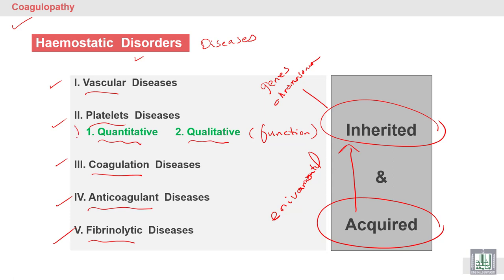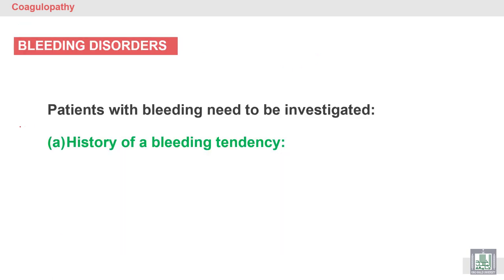Diseases may be quantitative or qualitative. Qualitative refers to the function of the factor or protein, while quantitative means a decrease in the concentration of the factor or protein. These lead to bleeding disorders, and we must investigate the patient.